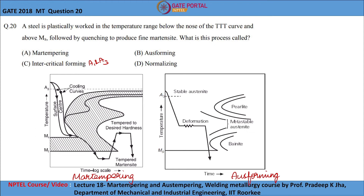Normalizing involves heating the steel to the temperature above austenitizing temperature (A3), and after holding it for a proper time, it is cooled in still air or slightly agitated air. Normalizing technically does not involve any mechanical deformation.